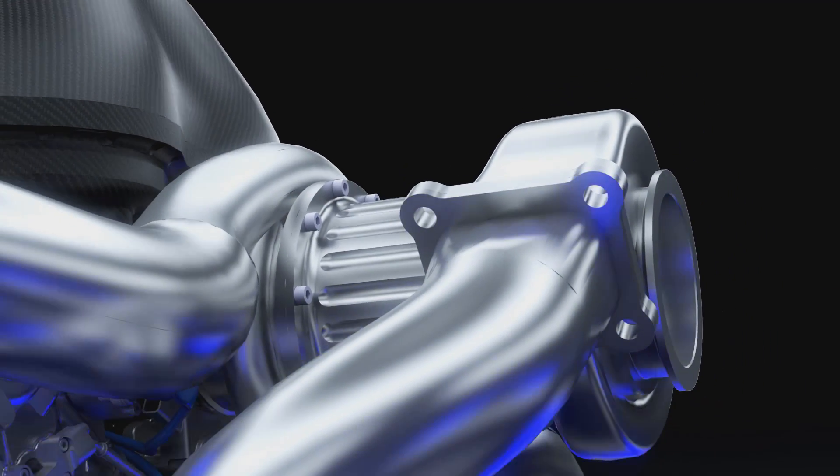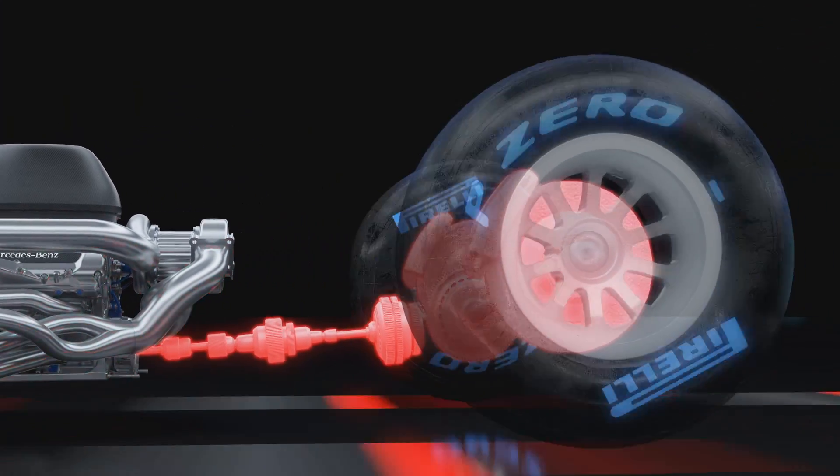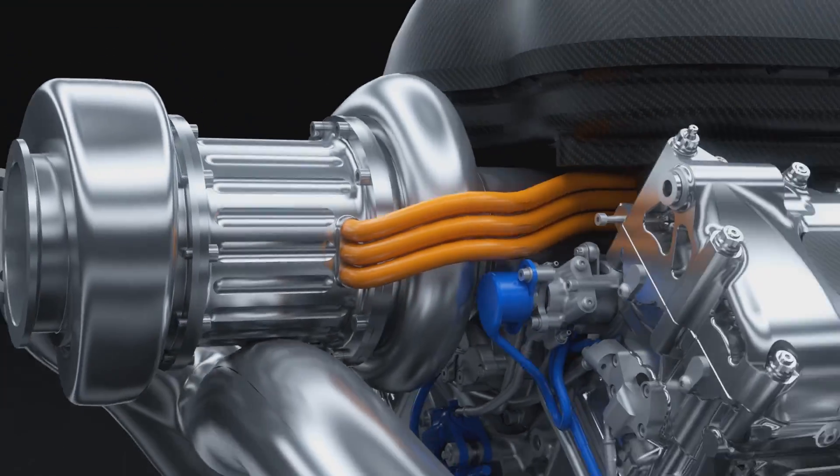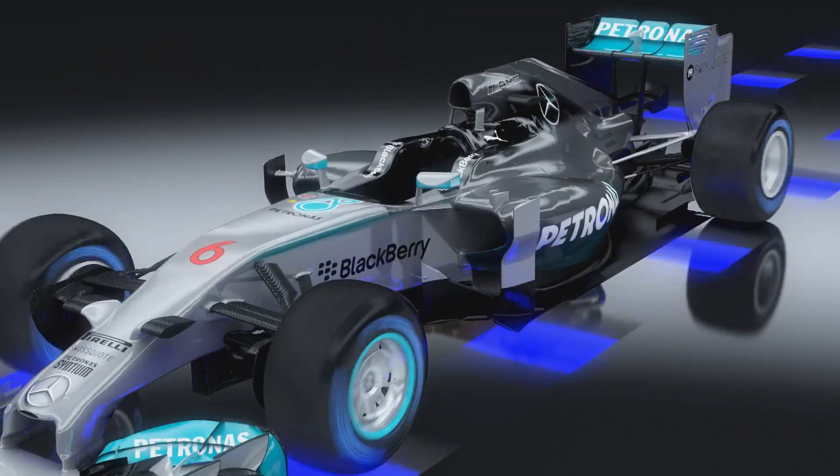The electric motors on their own develop more power than a family saloon car. It's the most advanced hybrid system yet seen in a race car. This new technology is used to achieve maximum efficiency because Formula One is now a fuel-based racing formula.